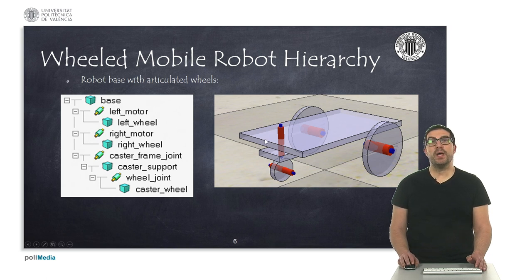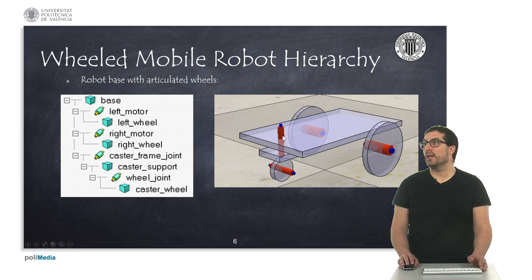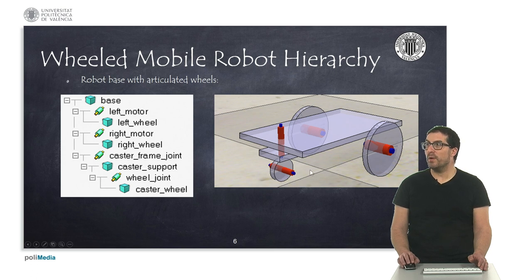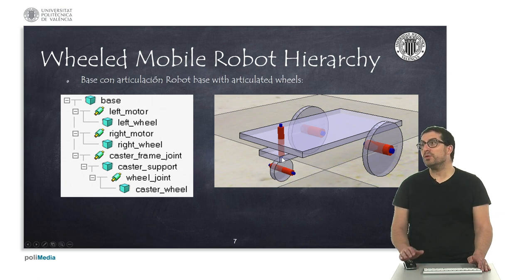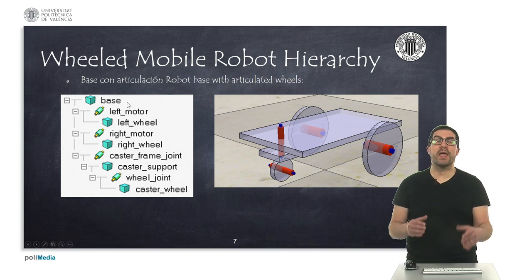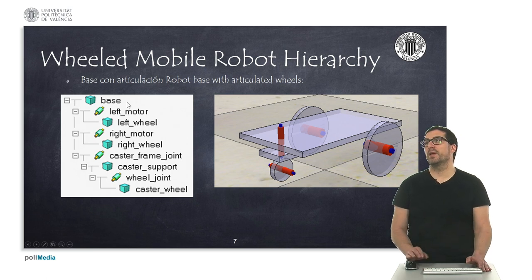Also, we have a supporting wheel — a caster wheel in this case. We can model this wheel by adding a vertical joint here, which corresponds to this joint here, and a caster support which will rotate freely based on the orientation of this joint, and another horizontal joint with the wheel that will be in contact with the ground. Although we don't show it here, if our robot includes sensors, they will be children of the robot base or any other object that is a child of the base.